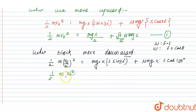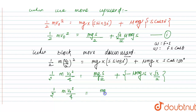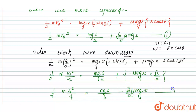The second equation (downward motion): (1/2)·m·(v0/2)² = m·g·s/2 + μ·m·g·s·cos(150°). Since cos(150°) = −√3/2, this becomes: (1/8)·m·v0² = m·g·s/2 − μ·m·g·s·(√3/2). This is Equation 2.